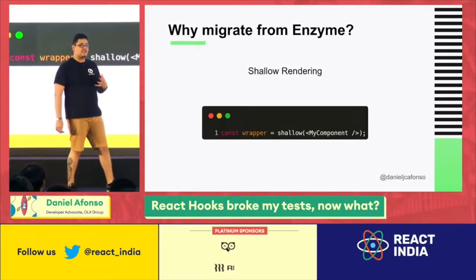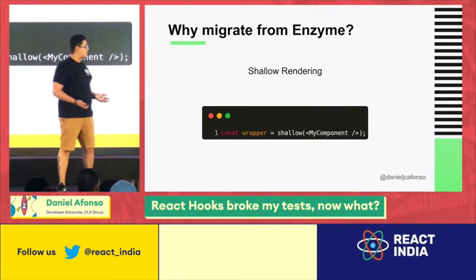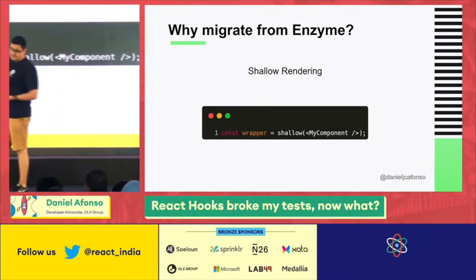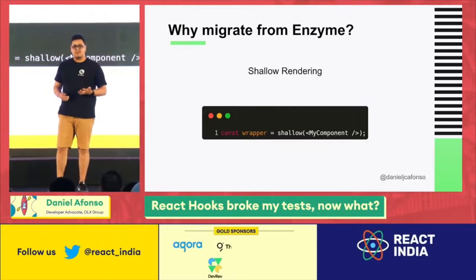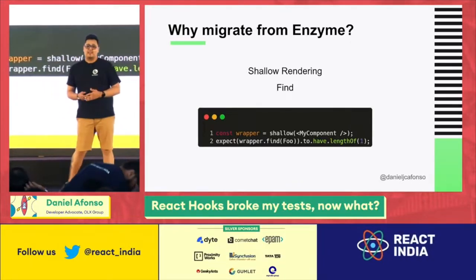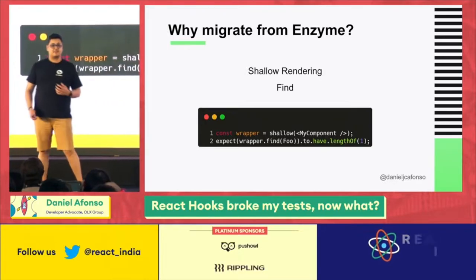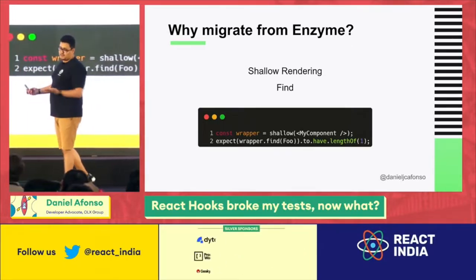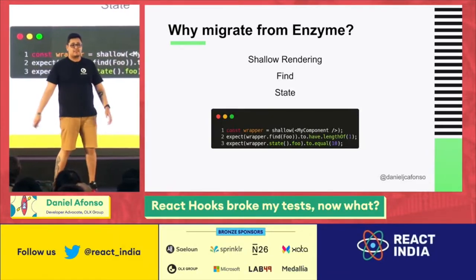Here are a couple of examples of things I personally don't like about Enzyme. First is shallow rendering — the way we can render our tests but only the shallow part. If our component has children, those children won't be rendered. By rendering only the shallow part, we are not testing our stuff the same way the user interacts with our components. The second thing is Find — it allows you to test and search for stuff using your component name. A component name is an implementation detail: if it changes, your test will break, because the user doesn't care what the component name is.